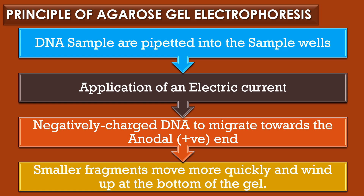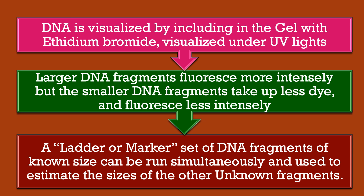Principle of agarose gel electrophoresis. DNA samples are pipetted into the sample wells, followed by the application of an electric current which causes the negatively charged DNA to migrate towards the positive or anodal end. The rate of migration is proportional to size; smaller fragments move more quickly and wind up at the bottom of the gel. DNA is visualized by including ethidium bromide in the gel; they are visualized by fluorescence when illuminated with ultraviolet light. The larger DNA fragments fluoresce more intensely, but smaller DNA fragments take up less dye and therefore fluoresce less intensely. A ladder or marker is a set of DNA fragments of known size, run simultaneously and used to estimate the sizes of unknown fragments.